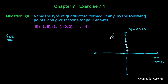So this point will be here: (-3, 5). Now we shall plot (3, 1) — here we have 1, 2, and 3, and here we have 1, so this point is (3, 1). And now we shall plot (0, 3) — here we have 0 and 3.